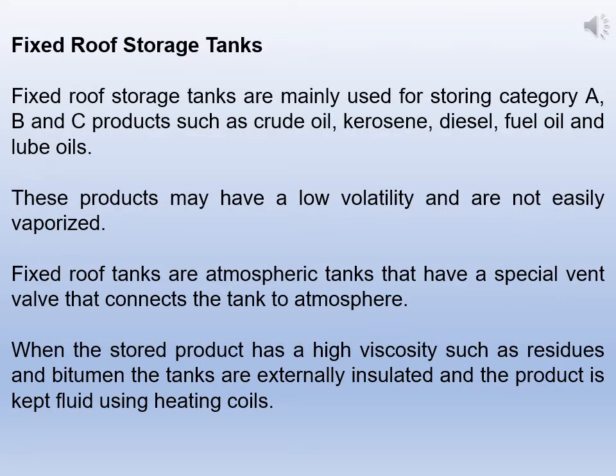Fixed roof storage tanks are mainly used for storing Category A, B, and C products such as crude oil, kerosene, diesel, fuel oil, and lube oils. These products may have low volatility and are not easily vaporized. Fixed roof tanks are atmospheric tanks that have a special vent valve connecting the tank to the atmosphere. When the stored product has a high viscosity such as residues and bitumen, the tanks are heavily insulated and the product is kept fluid using heating coils.